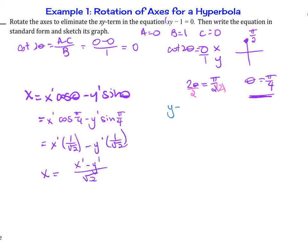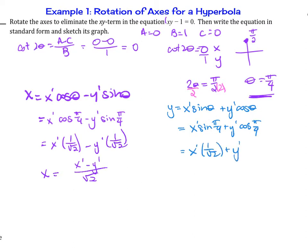For y, we use the same substitution: y = x′sin(θ) + y′cos(θ). Plugging in θ = π/4, we get y = x′(1/√2) + y′(1/√2), which simplifies to y = (x′ + y′)/√2. So now we have our x and y expressions ready to substitute into the original equation.